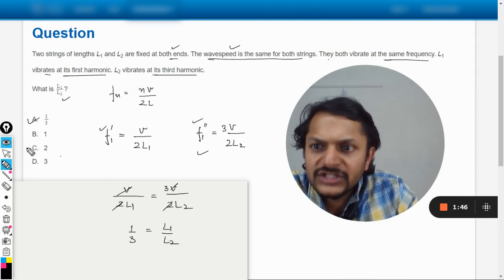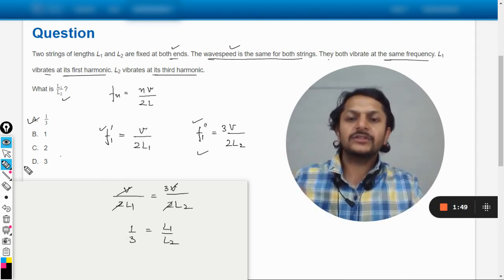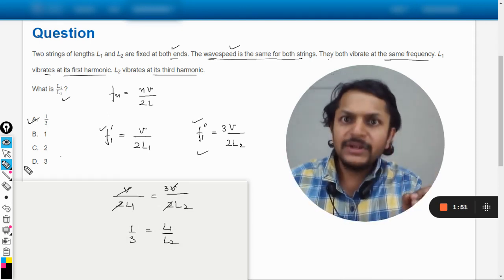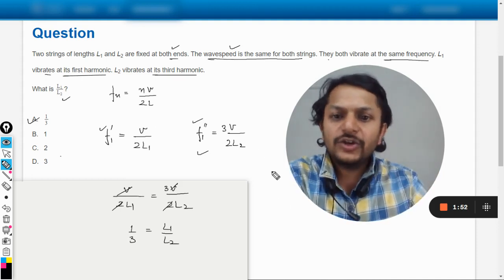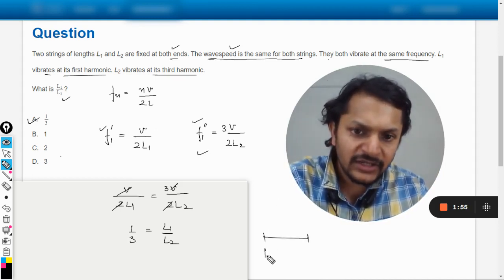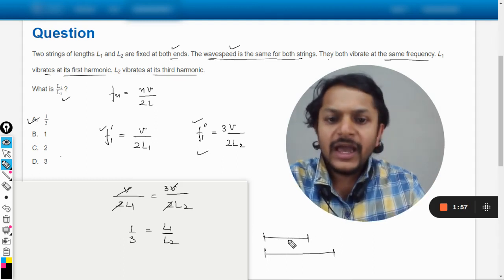So L1 by L2 is coming out to be 1 by 3. This is how we do it. I'm going to repeat this question, just listen to this. There are two different strings - one string is L1, another string is L2.